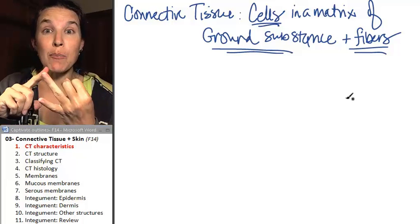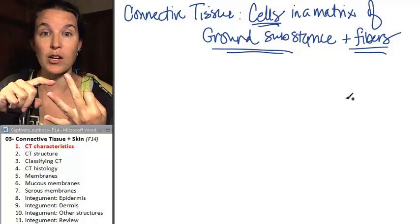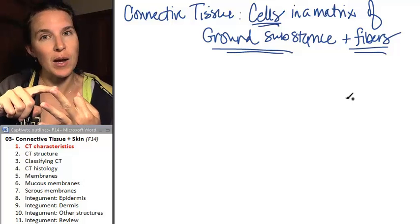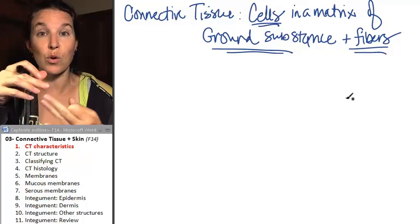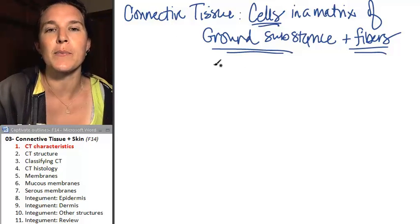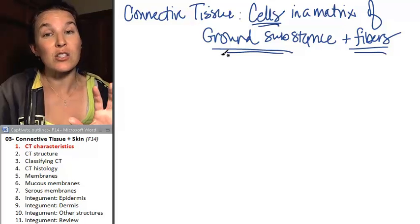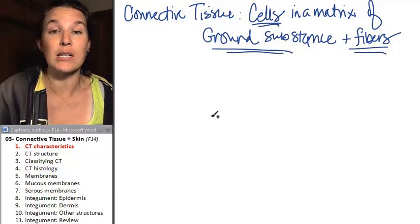That's what I'm talking about. We have cells in a matrix of ground substance and fibers. So three primary components in a connective tissue. You've got your cells, you've got your ground substance, and you've got your fibers. If you talk about the ground substance and the fibers together, you call it the matrix. So the cells sit in the matrix. And we'll talk about the structure of the connective tissues in more detail in the next section.